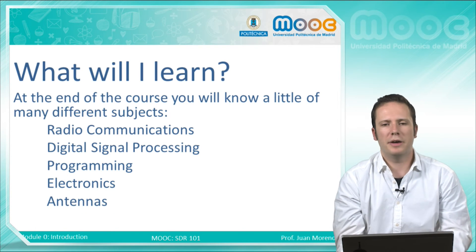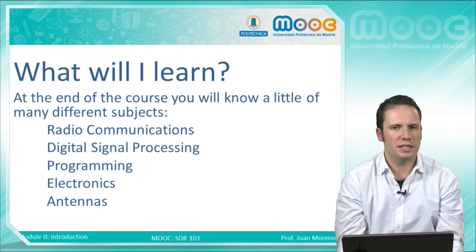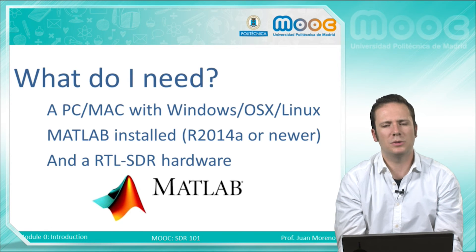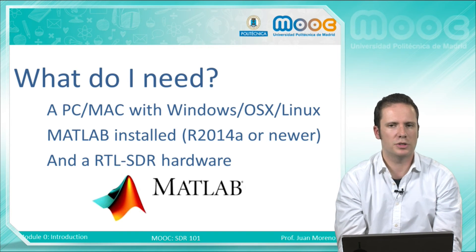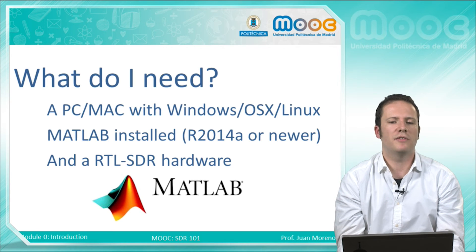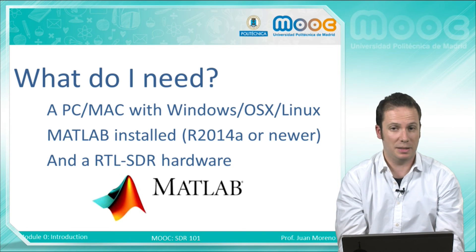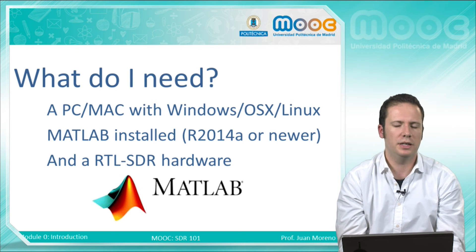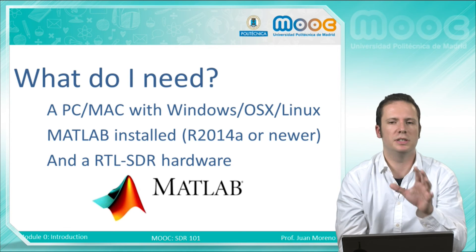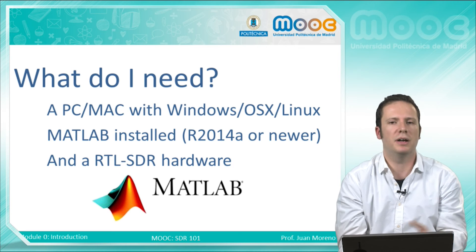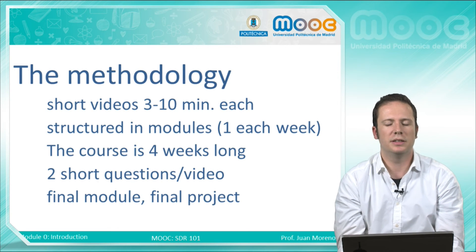Here you will learn a lot about radio communications, digital signal processing, programming, electronics, antennas, and more. One of the most important things is that to complete this course you only need the RTL-SDR hardware and also to have MATLAB installed on your PC. You can use almost any operating system you want, and MATLAB licenses are provided for free by MathWorks. So if you enroll in this course, you only need to buy the RTL hardware and install all this software for free.